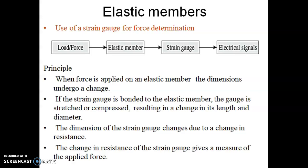Starting with elastic members or elastic transducers. The principle of elastic transducers is explained with the help of this picture. It contains an elastic member onto which a strain gauge is bonded. When a load or force is applied on the elastic member, it results in a dimensional change of the elastic member. This dimensional change changes the resistance of the strain gauge, and the change in resistance varies the potential difference or voltage, which is measured by an instrument.